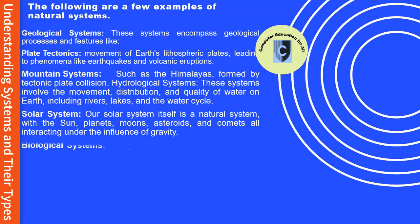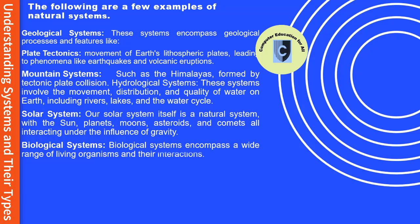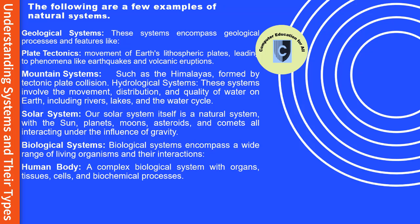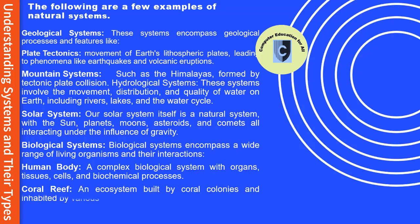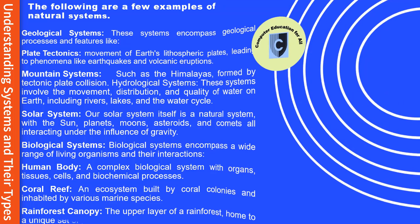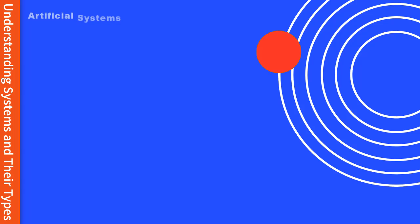Biological systems encompass a wide range of living organisms and their interactions. Examples include the human body — a complex biological system with organs, tissues, cells, and biochemical processes — a coral reef, an ecosystem built by coral colonies and inhabited by various marine species, and the rainforest canopy, the upper layer of a rainforest home to a unique set of plants and animals.